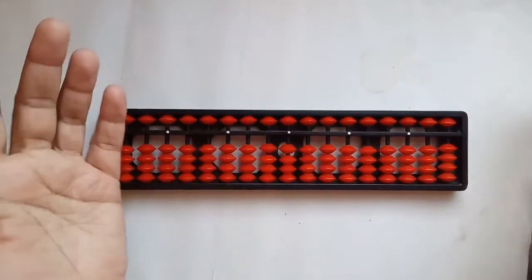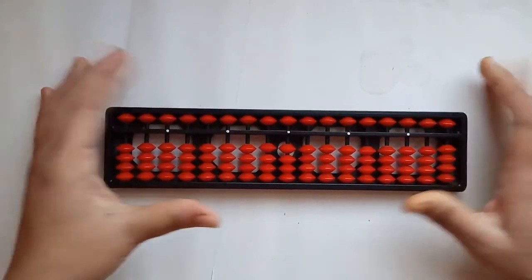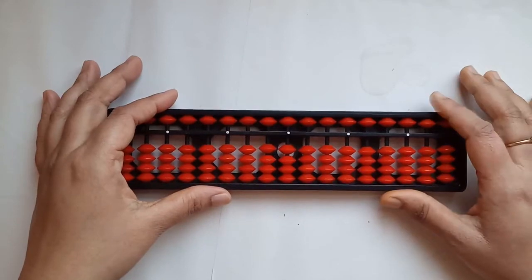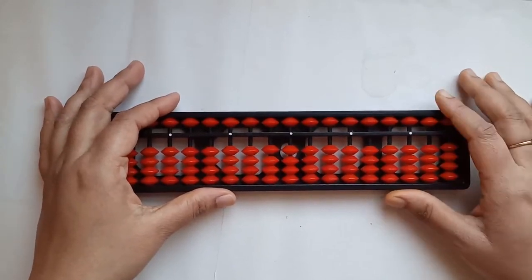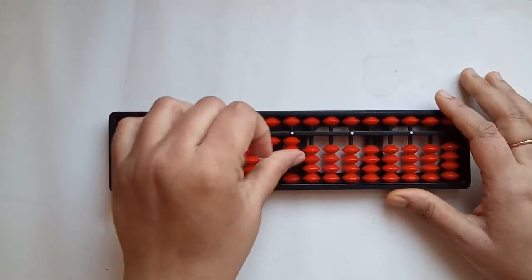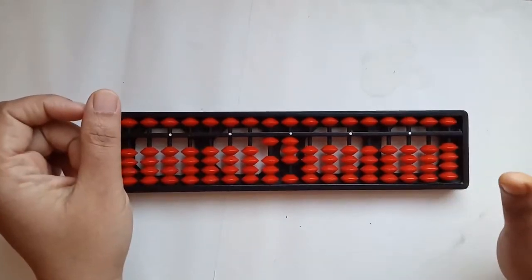Now, let's look at some examples. First example, 13 minus 5. We write 1, 3, 13. Now, to do a minus 5, we do not have the upper bead here.